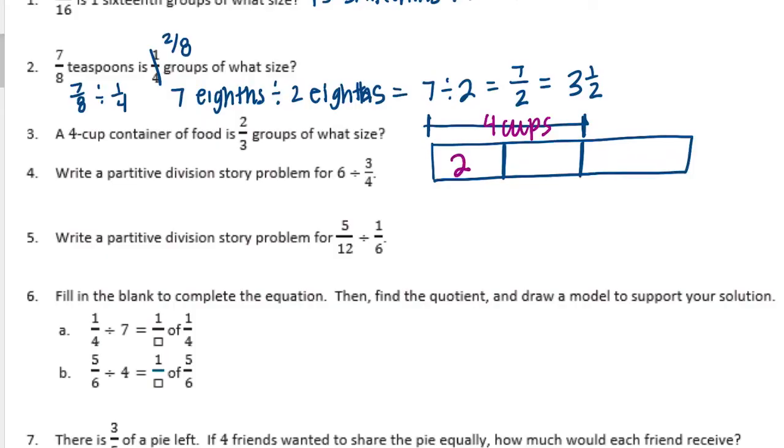Then 1 third would be 2 cups. 2 cups, 2 cups, and the whole container size, 2, 2, and 2 would be equal to 6 cups.